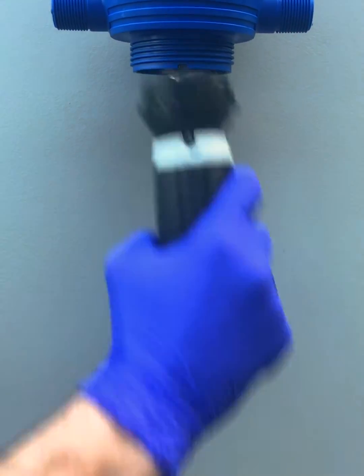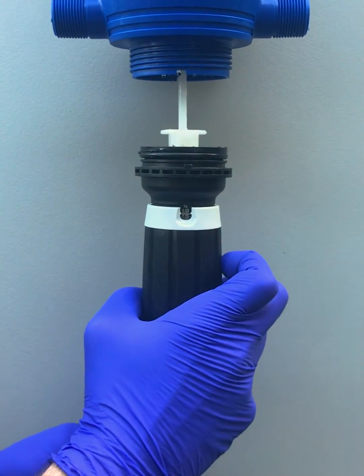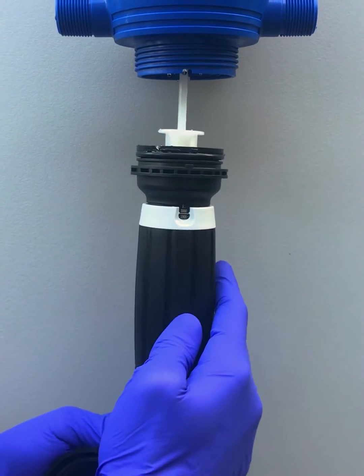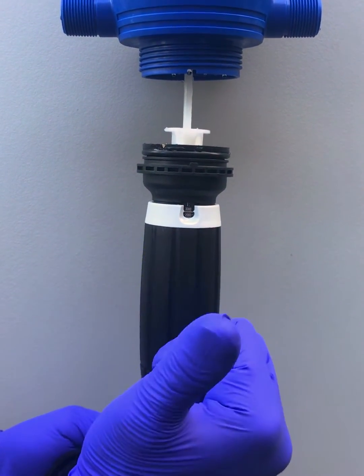Then pull down on the entire injection stem assembly and rotate it 180 degrees until your desired scale is facing out.